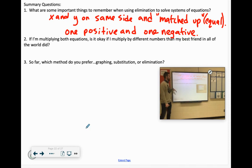If I'm multiplying both equations, is it okay if I multiply by different numbers than my best friend in all the world did? Yeah, that's fine. Maybe they were eliminating the x's and you were eliminating the y's. Or like that previous example with the 10x and the 15x—maybe they used 10 and 15 and you used 2 and 3. That's fine.